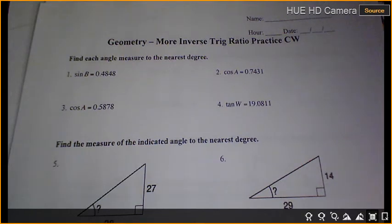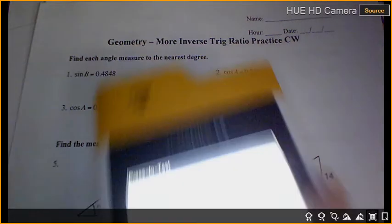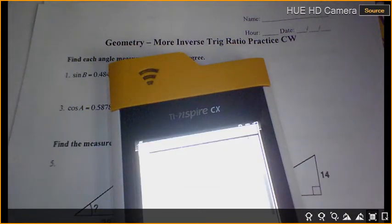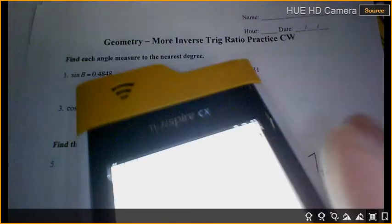Okay, if we see sine of B equals 0.4848, I'm literally going to go into my calculator page. I'm hitting the trig button. I'm going down to sine of negative 1, and I put 0.4848, push enter, I get 28.999. Let's see if this will show.